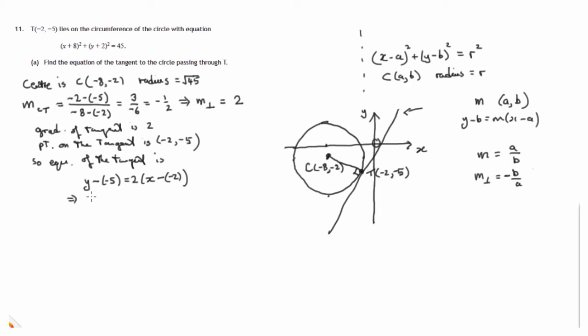So let's simplify this. y + 5 = 2(x + 2). Get rid of that bracket on the right hand side. y + 5 = 2x + 4. And let's take 5 from both sides. y = 2x - 1.